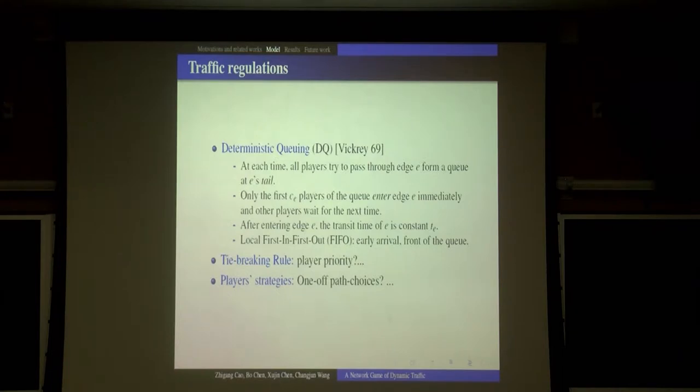So for every player, his latency on each edge includes two parts. One part is the variable waiting time. Another is the constant transit time. The queue rule here is quite simple: local first in, first out. Who arrives early, who is in front of the queue.